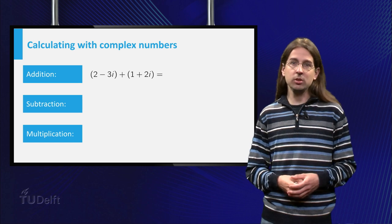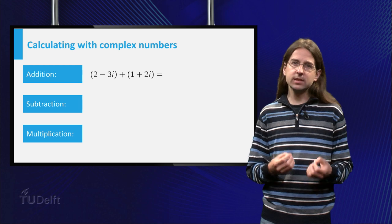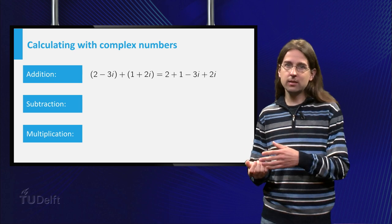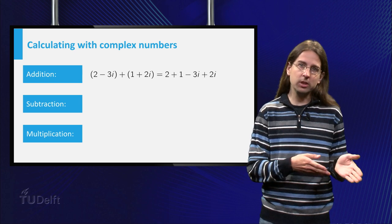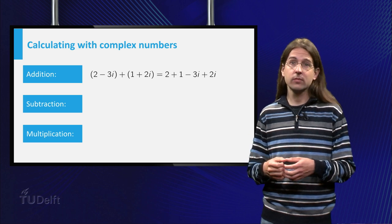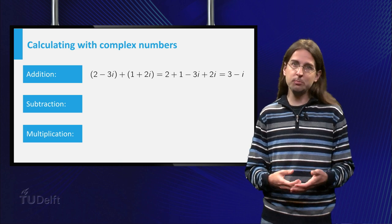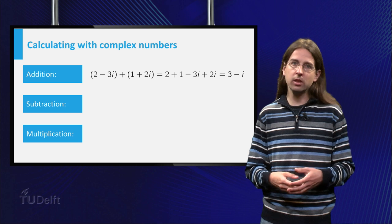If we add two complex numbers 2 - 3i and 1 + 2i, we just add the real parts and the imaginary parts, 2 + 1 + (-3 + 2)i. The result, 3 - i, is already of the form x + iy, so we are done.